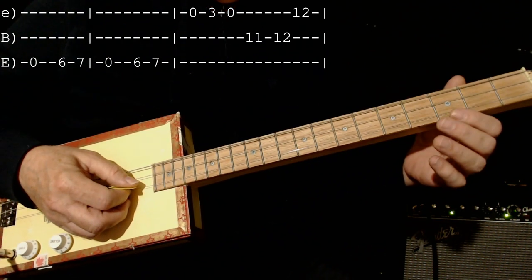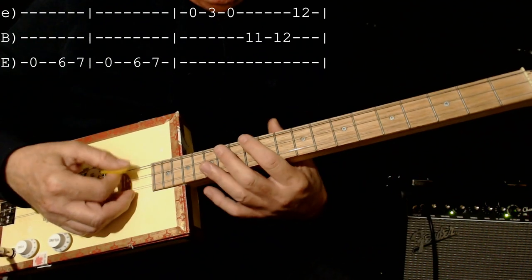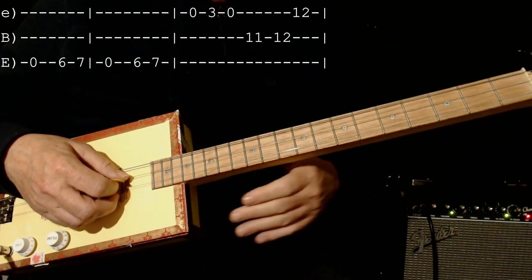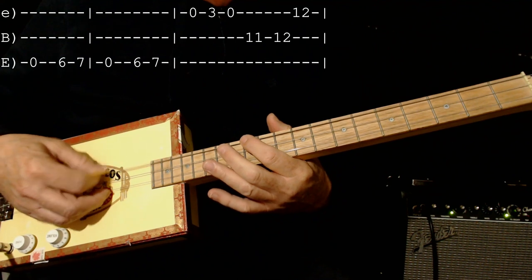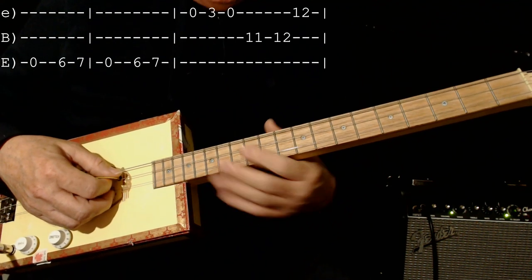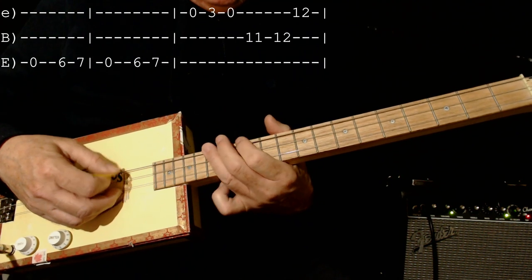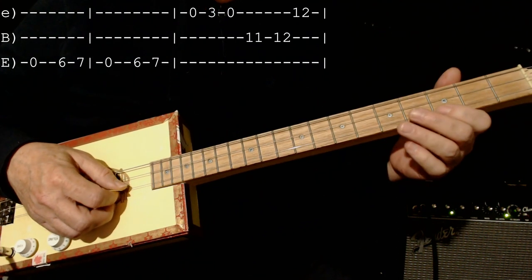Now the reason I do it down here as opposed to up here is because with the distortion, it didn't sound so good up there. So you could do it up here, which would be 12-15-12, but I'm doing it down here.